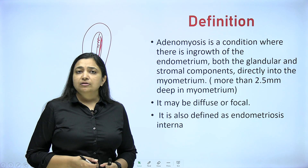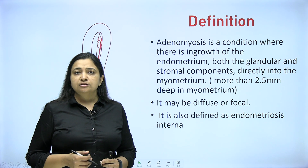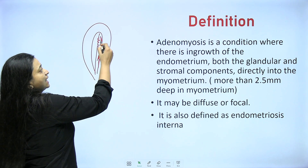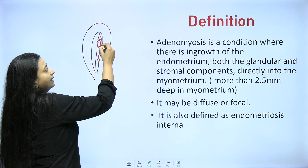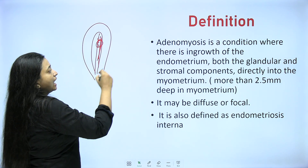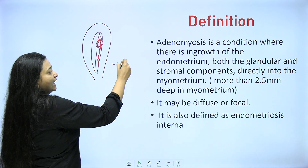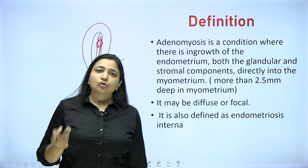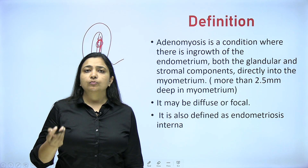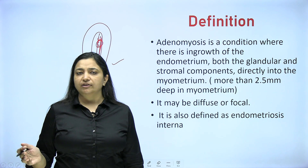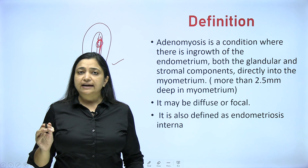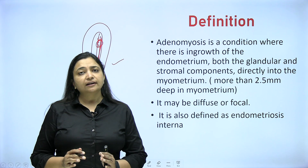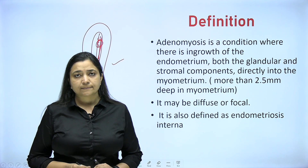In some pathologies like endometriosis, what do we mean? Endometriosis means these active endometrial cells are present elsewhere inside the body. It could be on the ovary, it could be on the peritoneum, or anywhere. That is endometriosis and we will be discussing it in detail in the coming classes.